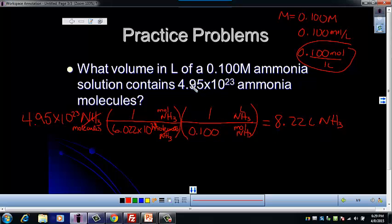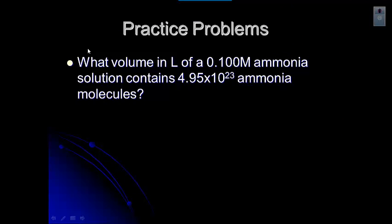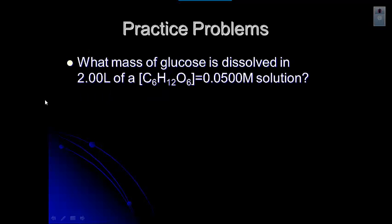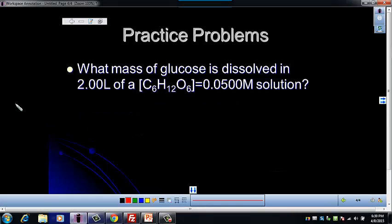Molarity as a conversion factor can be a little confusing, so let's try another example. In this problem, we're given a volume of a glucose solution with a concentration — those square brackets mean concentration — of 0.0500 molar, and we're asked for mass. From the flow chart, to find mass we need moles first, and to find moles we'll start with liters and use molarity as a conversion factor.